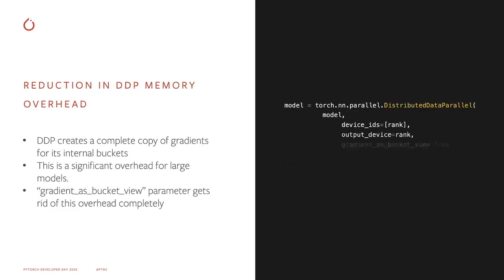We also have memory optimizations for DDP. DDP today creates buckets to batch parameters together for an all-reduce call, which is much more efficient. But DDP creates an entire copy of the gradients for these buckets. So if you have a one gigabyte model, you'll have one gigabyte of parameters, one gigabyte of gradients, and DDP takes another gigabyte because it creates a copy of those gradients. To get around this, we have a new parameter in DDP called gradient_as_bucket_view. What this does is make the .grad field of your parameters a view of the bucket, so we only have one copy of the gradients.